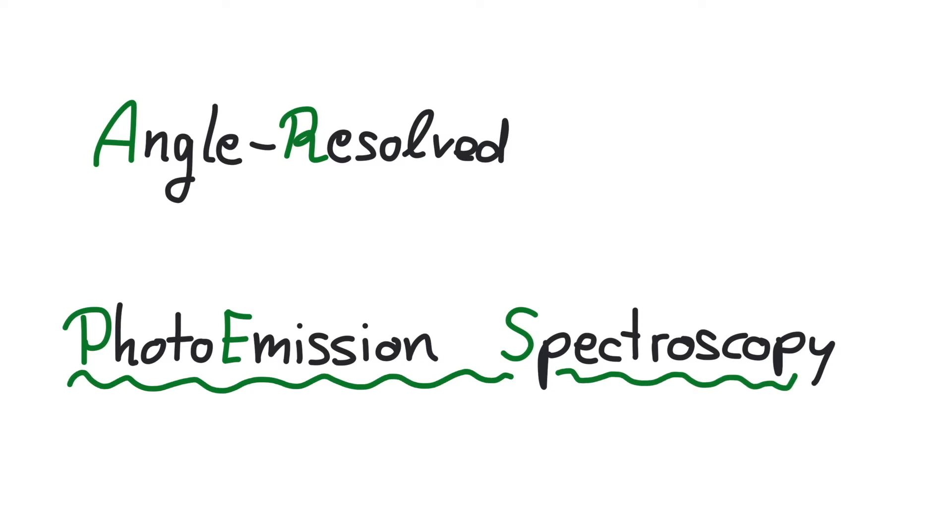ARPES is short for Angle-Resolved Photoemission Spectroscopy. It builds upon the primitive photoemission spectroscopy, which we have explained in a previous video.